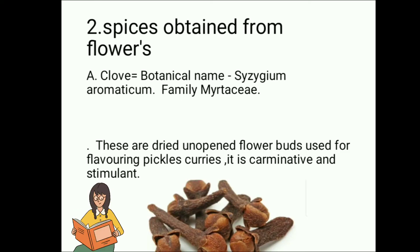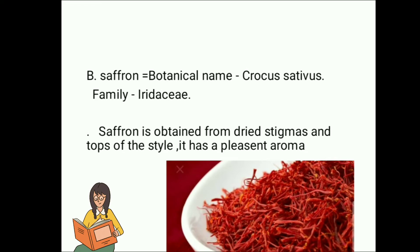Spices obtained from flowers. A. Clove — botanical name Syzygium aromaticum, Family Myrtaceae. These are dried unopened flower buds used for flavoring pickles and curries. It is carminative and stimulant. B. Saffron — botanical name Crocus sativus, Family Iridaceae. Saffron is obtained from the dried stigmas and style. It has a pleasant aroma.